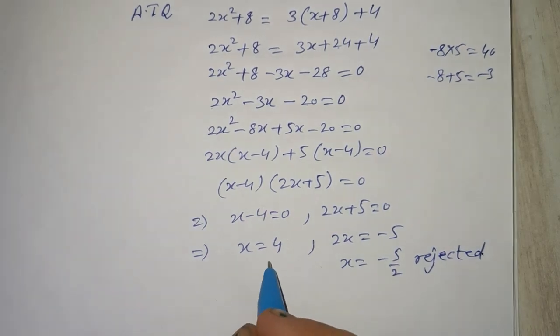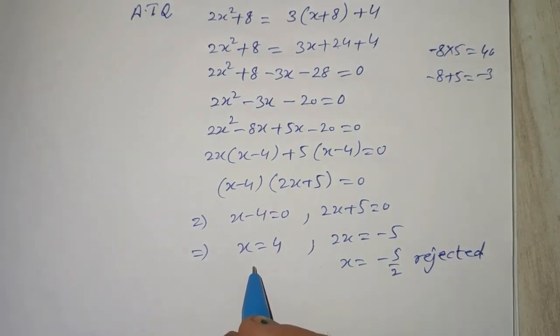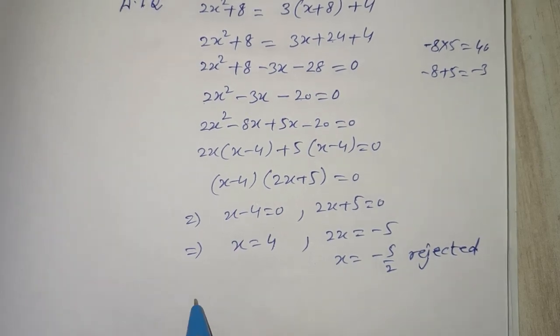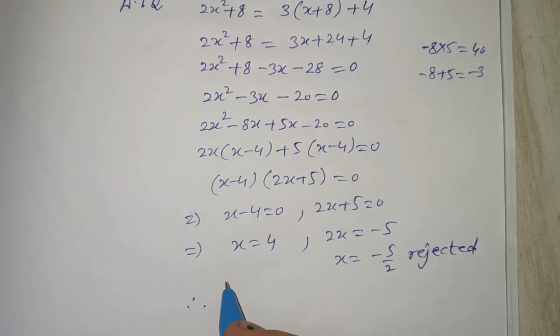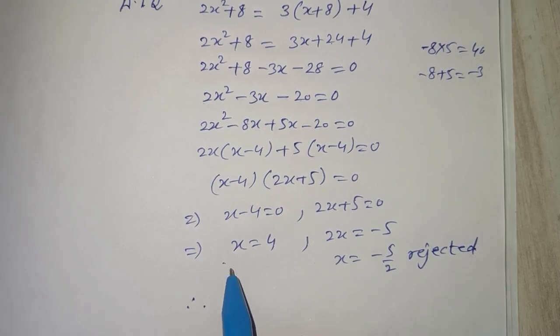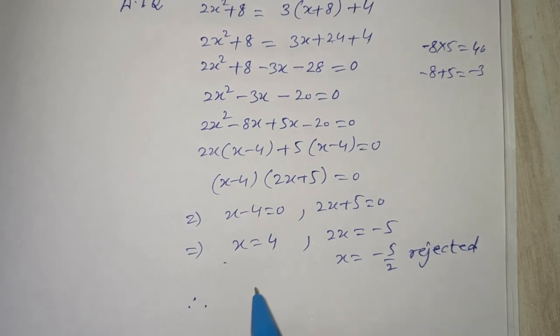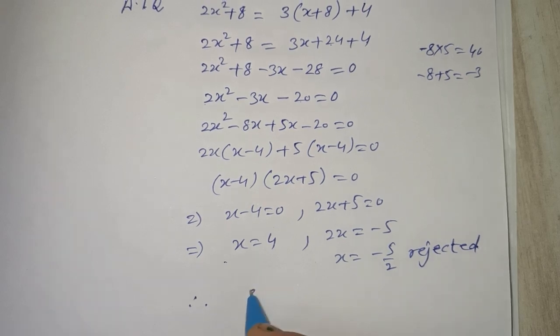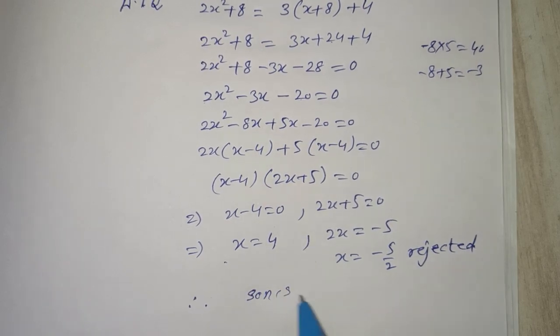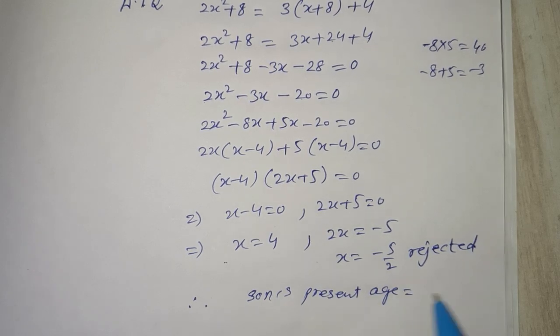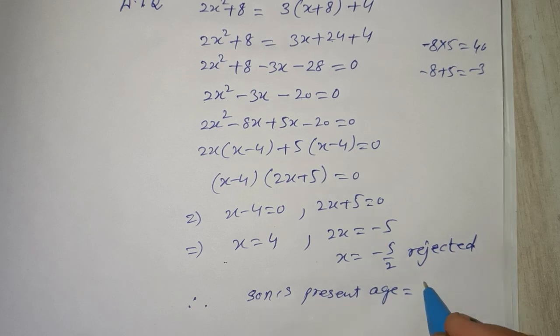So x is equal to 4. We had to find their present ages. Therefore, present is what I had taken - x and 2x square. So son's age was x, so son's present is x, x value is 4 years.